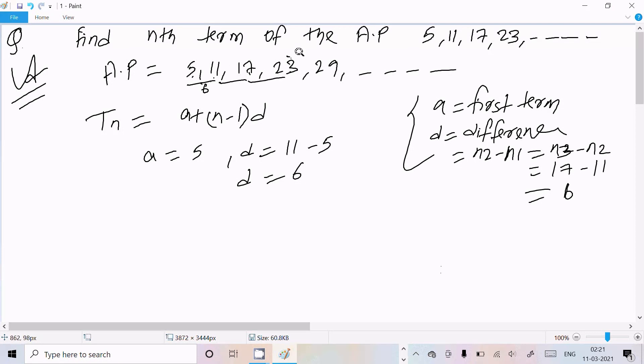6, 6, 6. Now I am going to calculate the nth term. So a value is 5, plus n minus 1, times d value which is 6. So: 5 + 6n - 6.